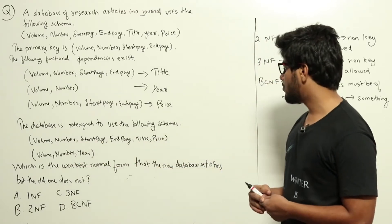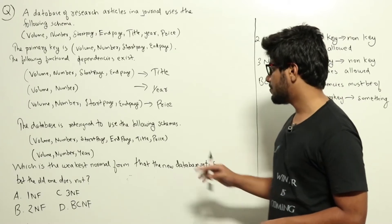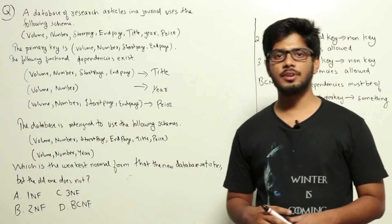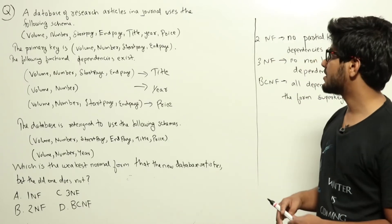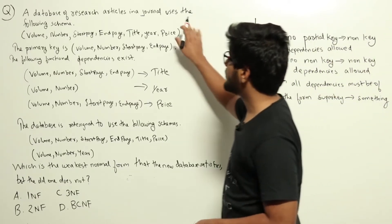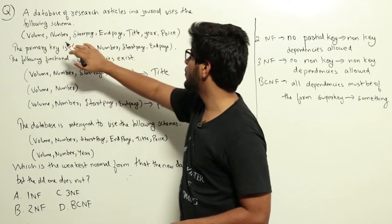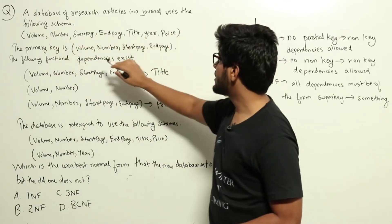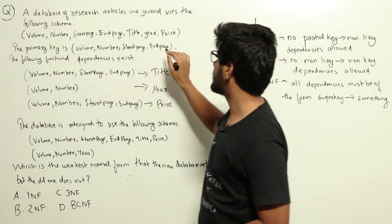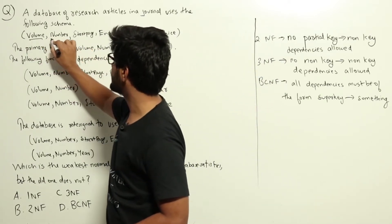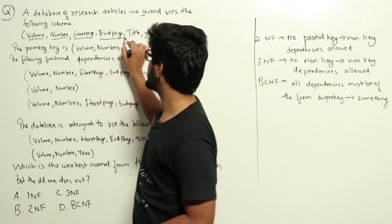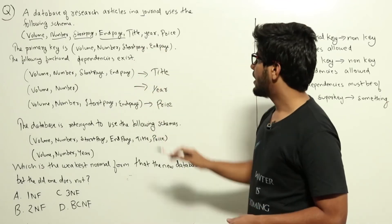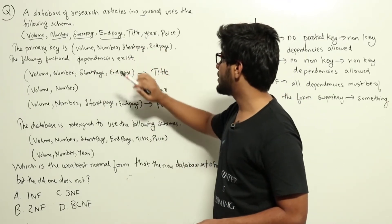The question asks: which is the weakest normal form that the new database satisfies but the old one does not? This is a question from database management systems regarding normalization. Initially we had a schema of Volume, Number, Start Page, End Page, Title, Year, and Price. The primary key is Volume, Number, Start Page, End Page.